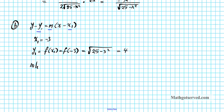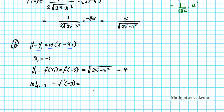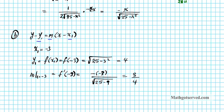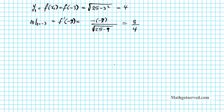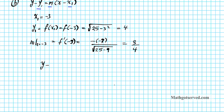The slope m at x equals negative 3 equals f prime of negative 3. Substituting into the derivative: negative negative 3 over the square root of 25 minus negative 3 squared, which gives 3 over 4. Now we write the tangent line equation: y minus y1 equals m times x minus x1. Substituting and adding 4 to both sides, the equation is y equals 4 plus three-fourths times x plus 3.